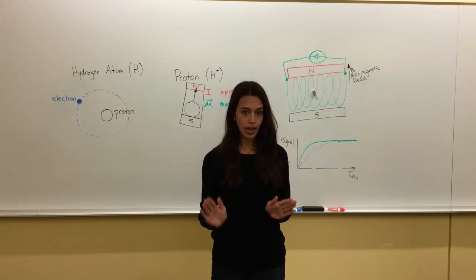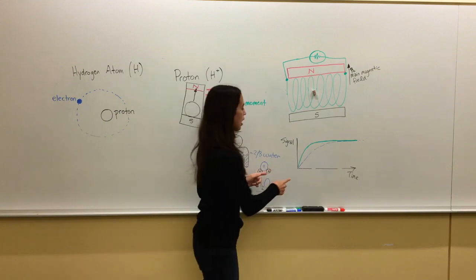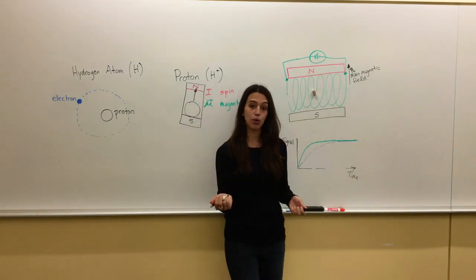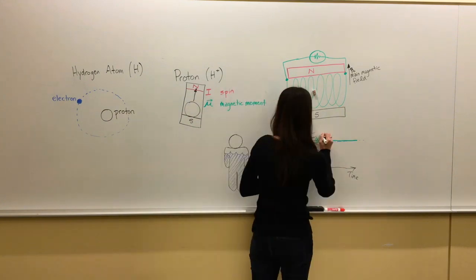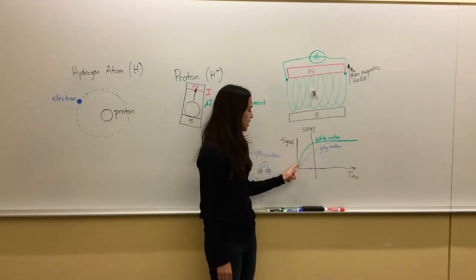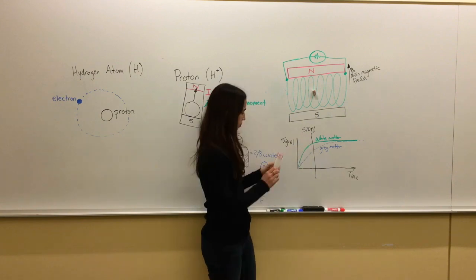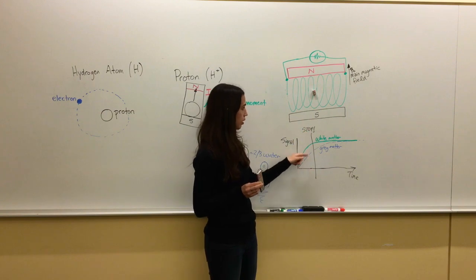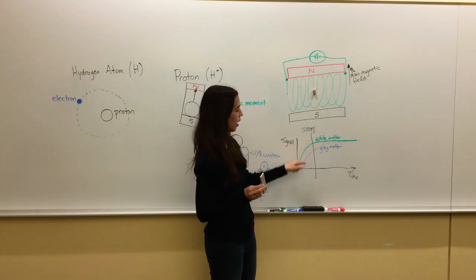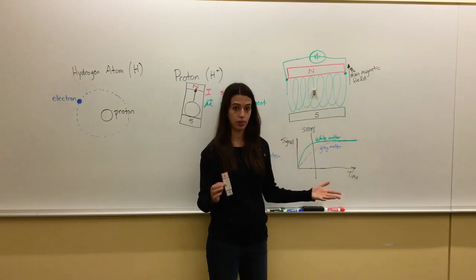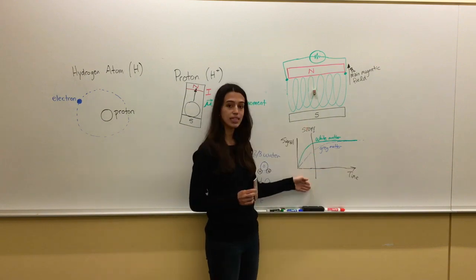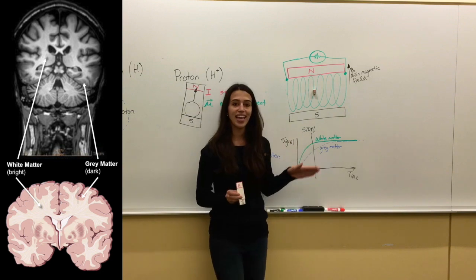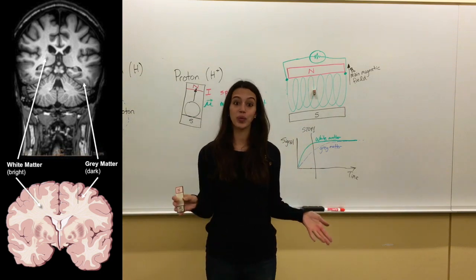Now for an MRI image, we have to say stop at a particular time along the time axis. So let's say we say stop over here. The protons that are from this green, let's say it's white matter, has a higher signal at this point in time than the signal coming from this little guy. Let's say those are gray matter protons. So if we say stop at this instant in time, our MRI image is going to have white matter that's brighter than gray matter. And this is exactly what we see in a T1 weighted image.